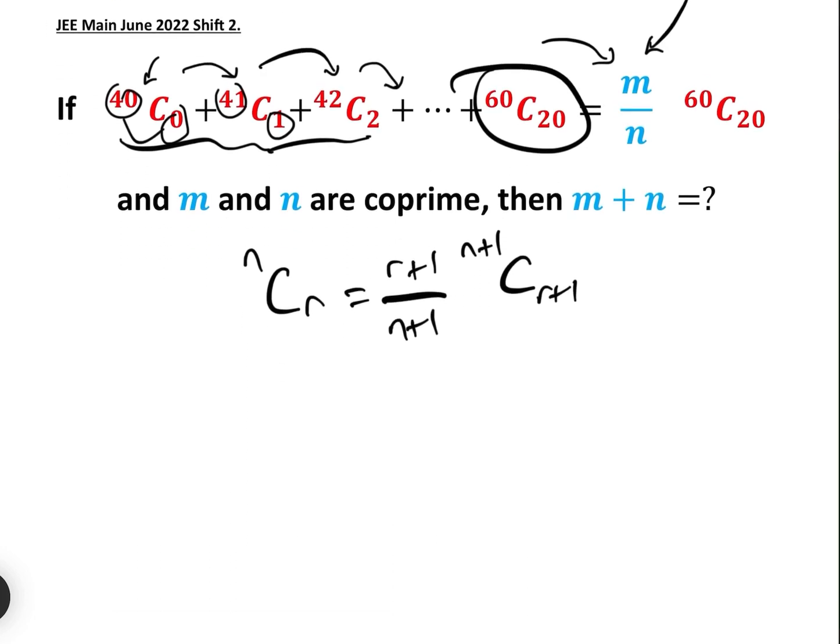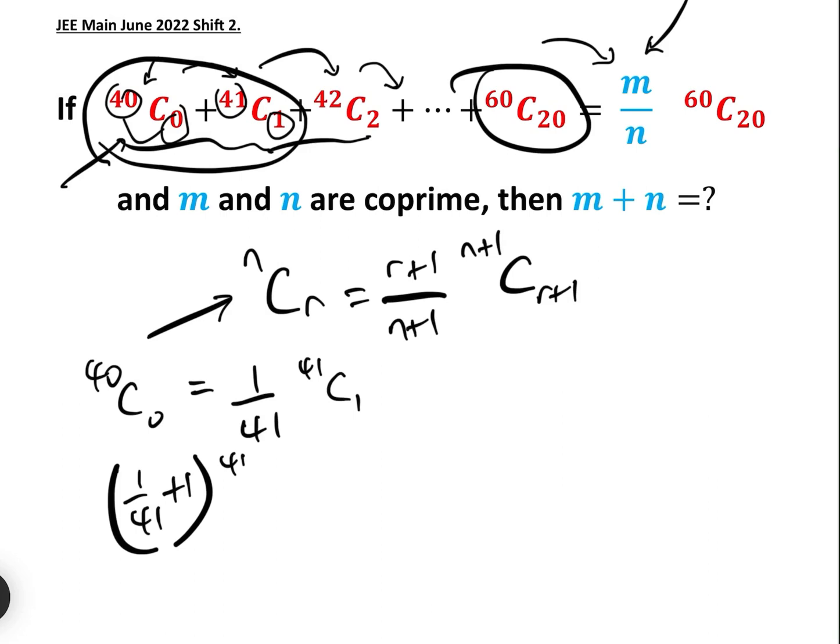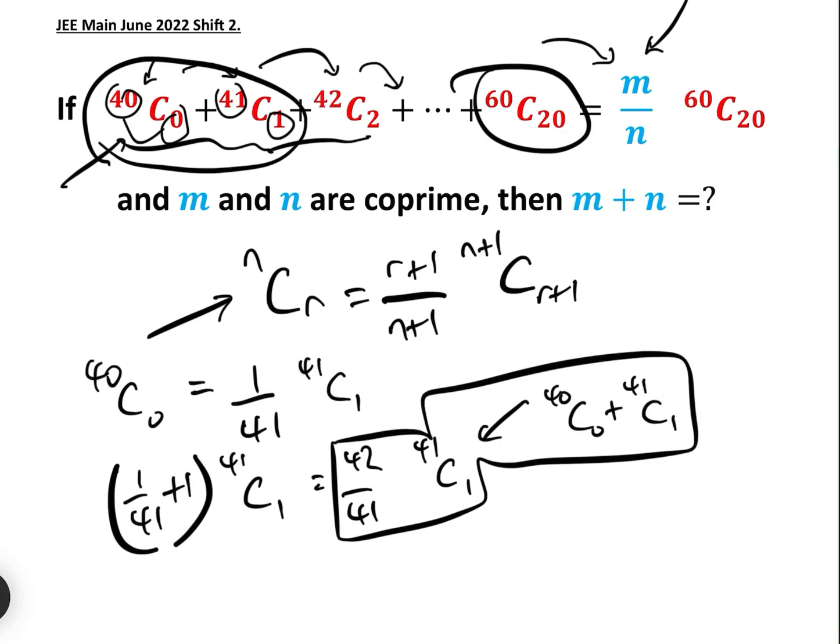Let's have a look first of all at 40C0. Well, 40C0 just plugging in here equals, clearly R is 0 and N is 40, so that equals 1 over 41 times 41C1. So if we replace 40C0 by 1 over 41 times 41C1, then these two combined give us 1 over 41 add 1 times 41C1, which is 42 over 41 times 41C1.